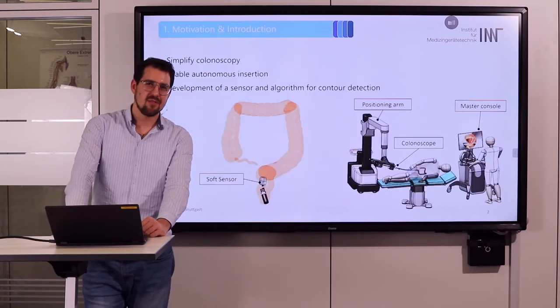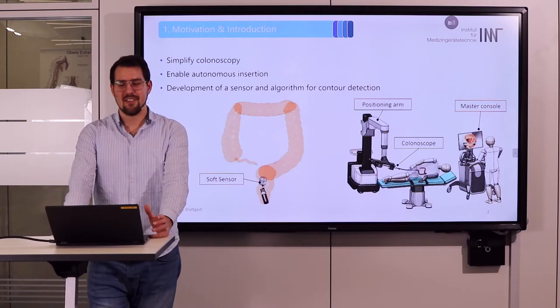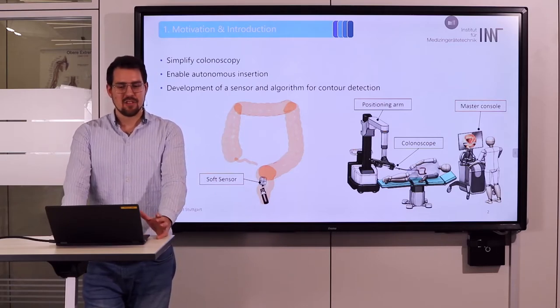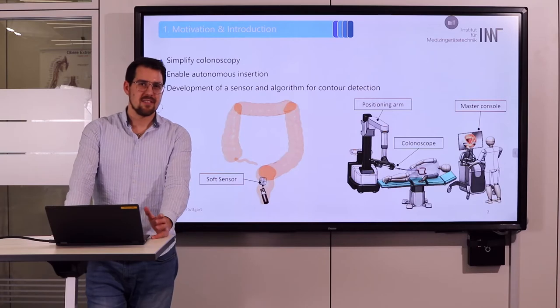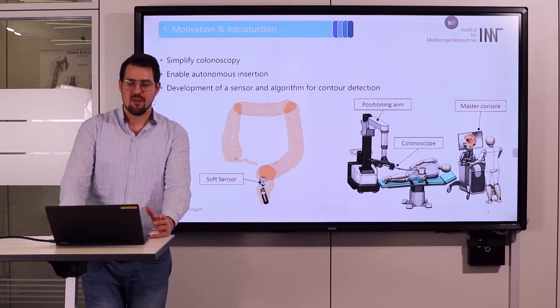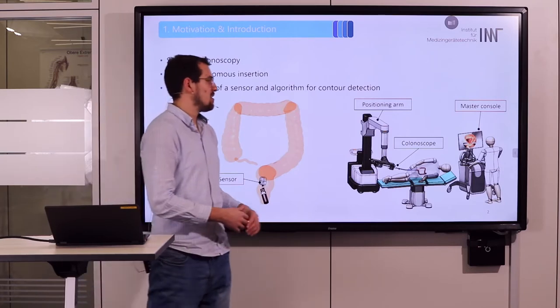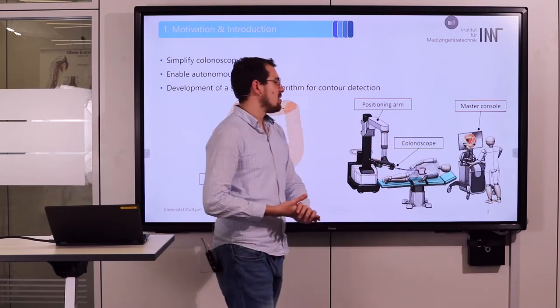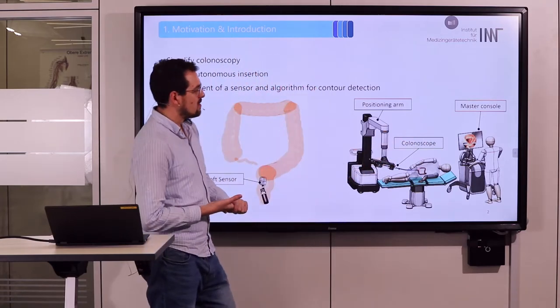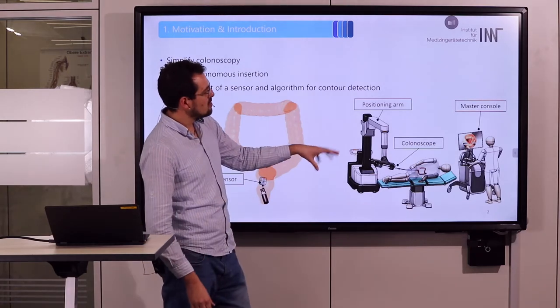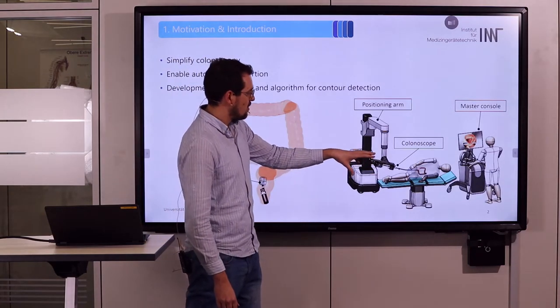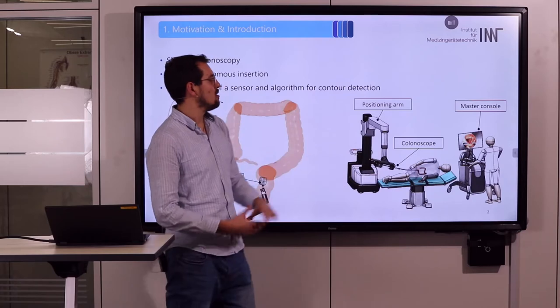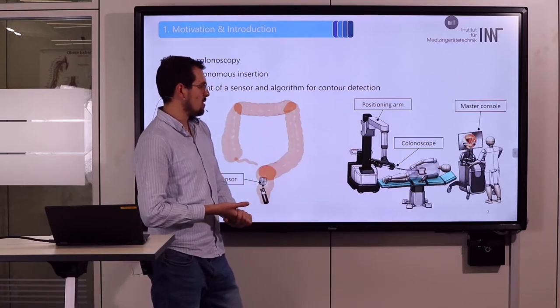Our aim is to make colonoscopy easier and enable complex operations. To achieve this we want to use robotic assistance. We have a master console where the user is standing and controls a positioning arm where the robotic-assisted colonoscope is sitting and performing the colonoscopy.